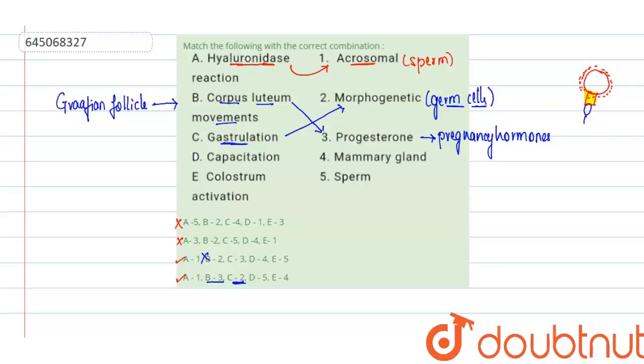Now let us see D, capacitation. Capacitation is the activation of the sperm if it should activate or fertilize the ovum. This particular capacitation process occurs only in the female genital tract. We can easily see that capacitation D is matched to 5, and that is given in the last option.